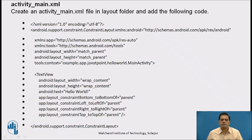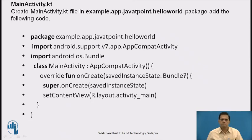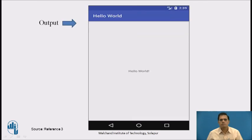The Kotlin activity_main.xml is created. Create an activity_main.xml file in the layout folder and add the provided code. This code links to the Java code and displays the Hello World app. Then write main_activity.kt — .kt is the Kotlin file extension, just as .java is for Java. Create main_activity.kt in the Hello World package, add the following code, then run your app on your device. The output will display the Hello World app in Kotlin.